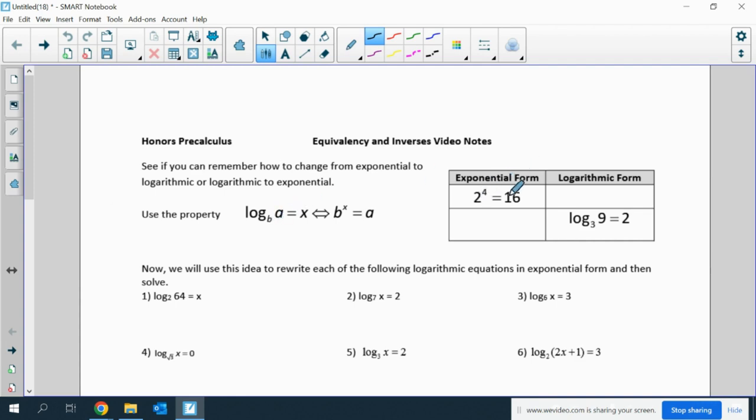If we have something in exponential form like 2 to the 4th equals 16, we can rewrite that as log base 2 of 16 equals 4. Likewise, if we have log base 3 of 9 equals 2, we could rewrite that in exponential form as 3 squared equals 9. We can use the property log base b of a equals x is the same thing as b to the x equals a.